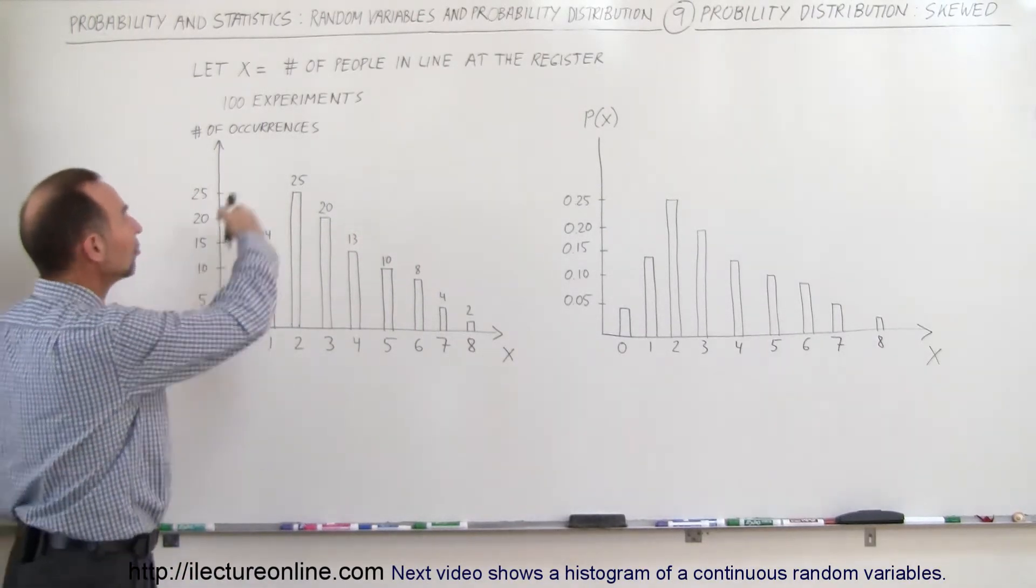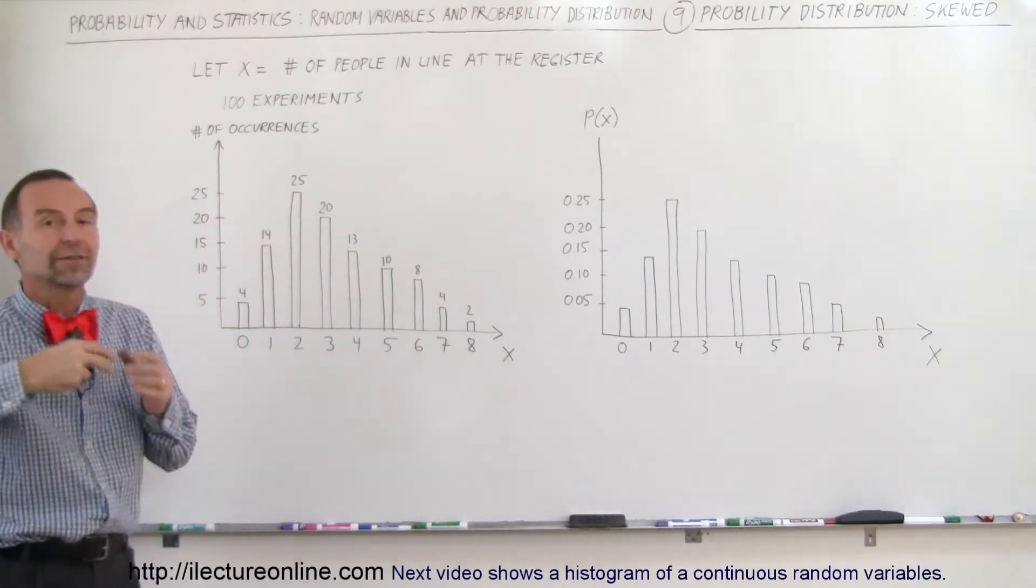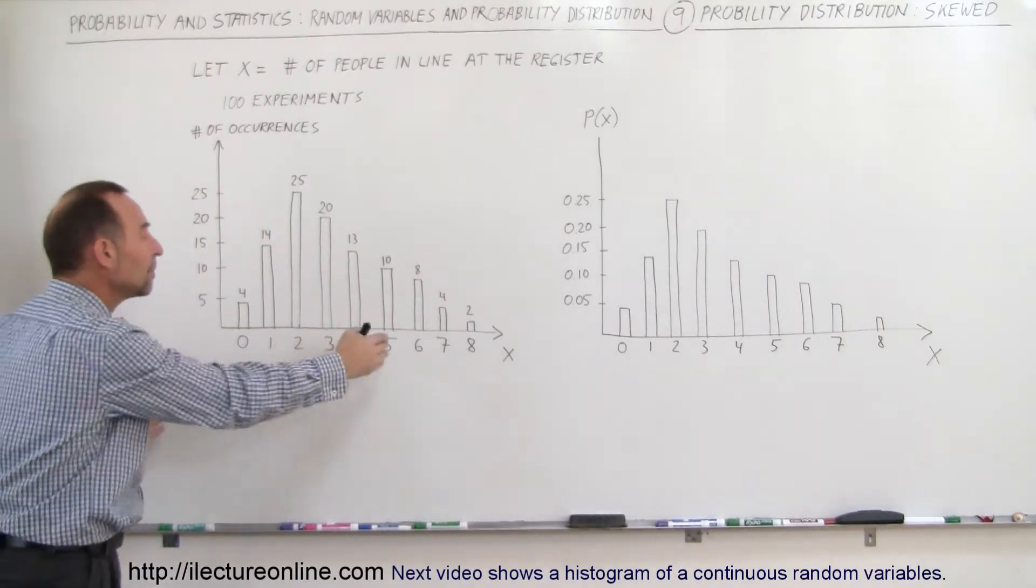And so here we have a histogram that shows the number of occurrences, the number of times it happened that there was this many people standing in line.